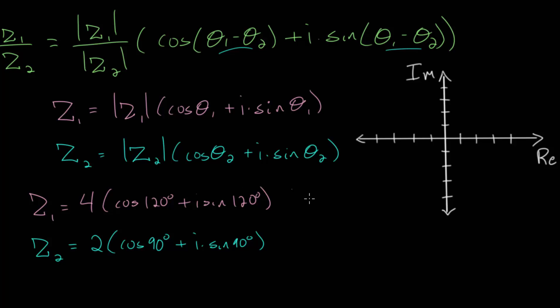If we want, we can put these numbers into their rectangular forms by distributing the magnitude and simplifying the expression, either using a calculator or the unit circle. For z1, we would get minus 2 plus i times 2 times the square root of 3. For z2, notice that it's at a 90 degree angle and has a magnitude of 2, meaning that it will essentially just be right here on the positive imaginary axis. The cosine of 90 is 0 and the sine of 90 is 1, so we just get 2 times i.